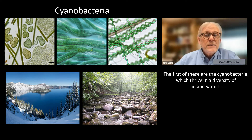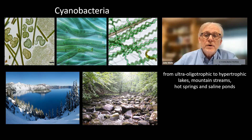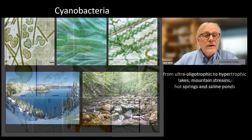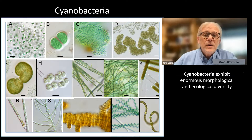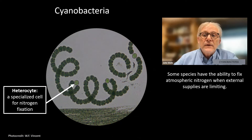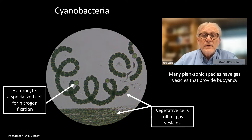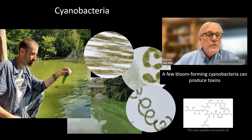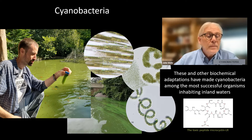First of these are the cyanobacteria, which thrive in a diversity of inland waters, from ultra-oligotrophic to hypertrophic lakes, mountain streams, hot springs, and saline ponds. Cyanobacteria exhibit enormous morphological and ecological diversity. Some species have the ability to fix atmospheric nitrogen when external supplies are limiting. Many planktonic species have gas vesicles that provide buoyancy. A few bloom-forming cyanobacteria can produce toxins. These and other biochemical adaptations have made cyanobacteria among the most successful organisms inhabiting inland waters.